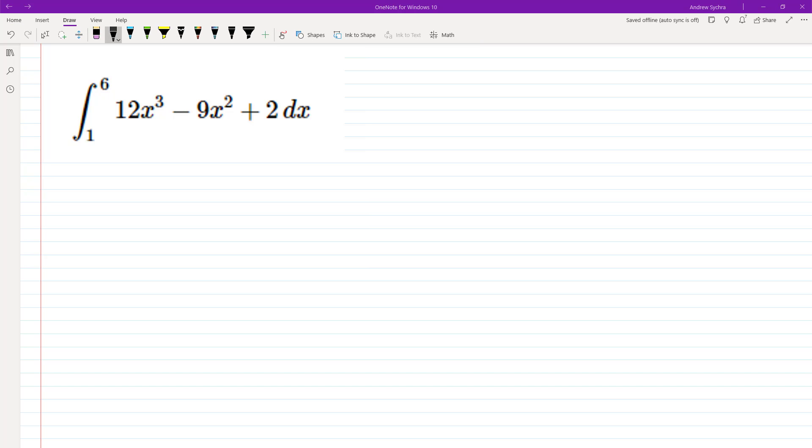So first thing we'll do is we'll integrate each portion of this. So our constant 12 and we integrate each individual component. So x cubed dx minus nine integrate x squared dx plus constant two.